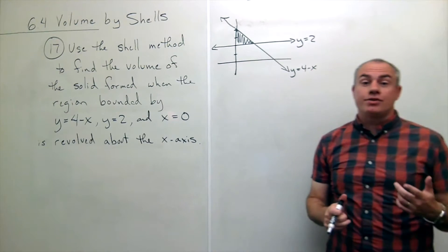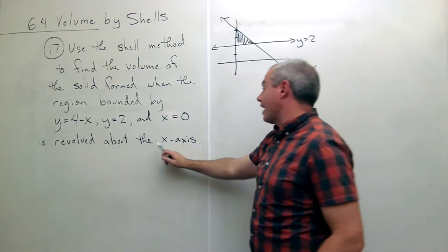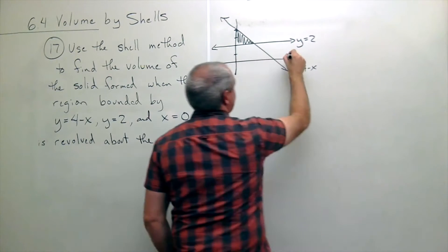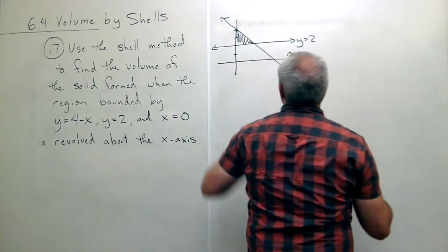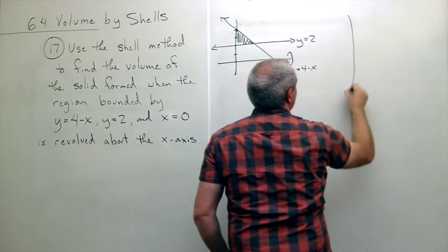Alright, so we want to revolve that guy around the x-axis, which is right here, and when we do, we get some sort of a shape like this.